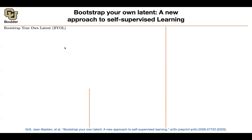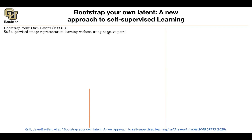Let's see what the idea of Bootstrap Your Own Latent is. We are going to be doing self-supervised image representation learning without negative pairs. With representation learning and self-supervised learning, you want to learn a function that you apply to an image, and it gives you good representations to use in downstream tasks.